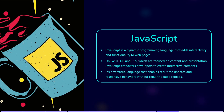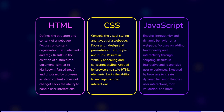Let's talk about the key differences in purpose and capability. HTML defines the structure and content of the web page — it's like the skeleton. CSS controls the visual styling and layout — it's like the skin. JavaScript enables interactivity and dynamic behavior — it's like the brain. HTML focuses on content organization using elements and tags. CSS focuses on design and presentation using styles and rules. JavaScript focuses on adding functionality and interactivity through scripting. HTML results in a structured document, quite similar to Markdown. CSS results in visually appealing and consistent styling.